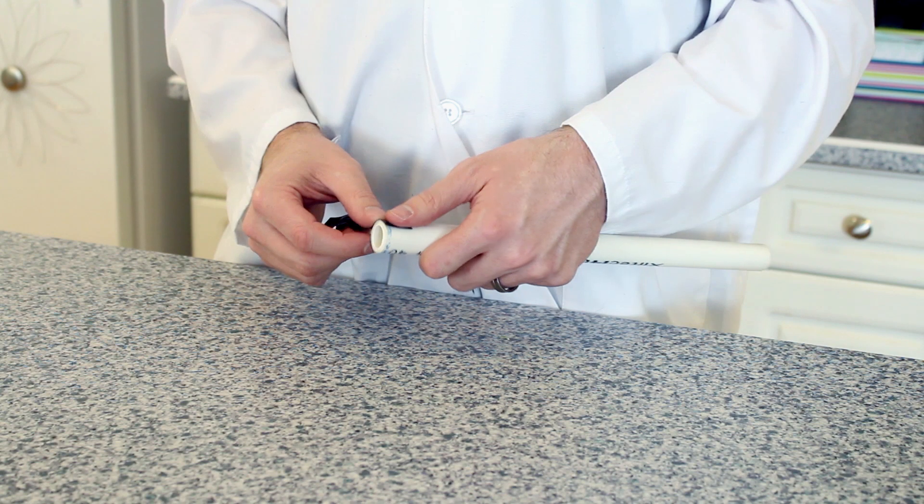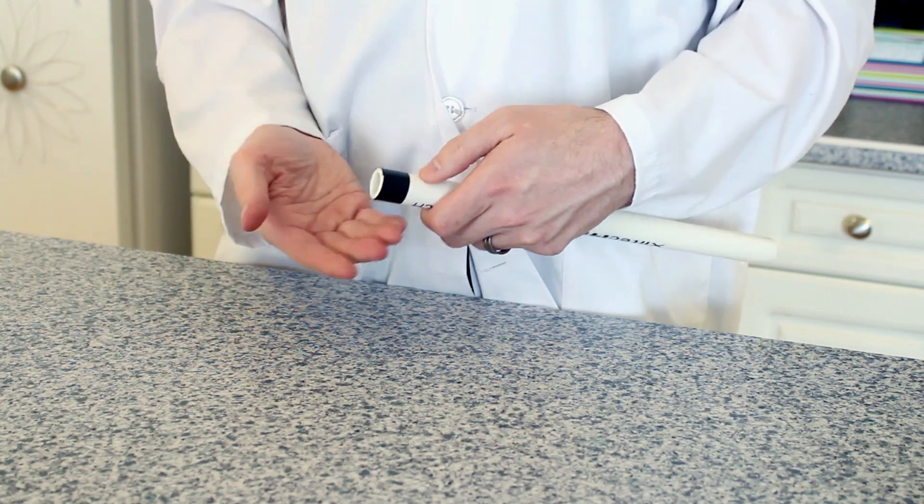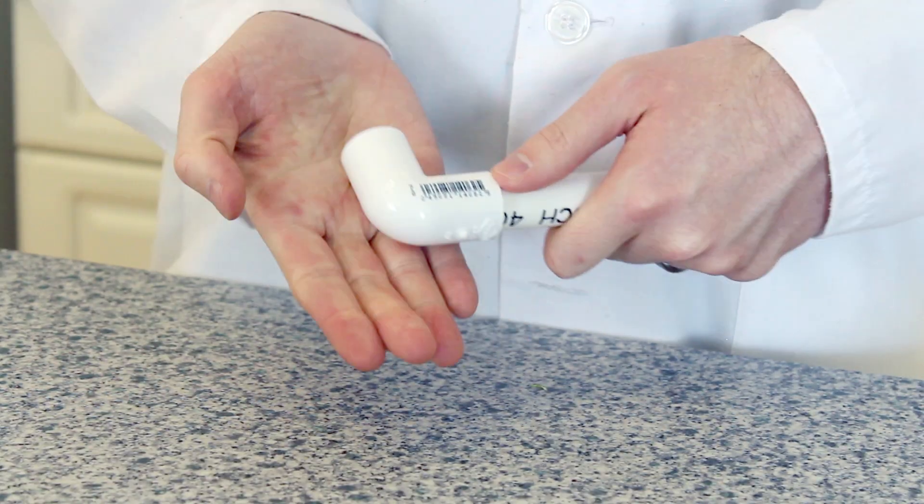If it's a little loose, take a little bit of tape and wrap it around one end of the pipe before putting it into the bottle. Now, take your first elbow joint and put it on the other end of your pipe.